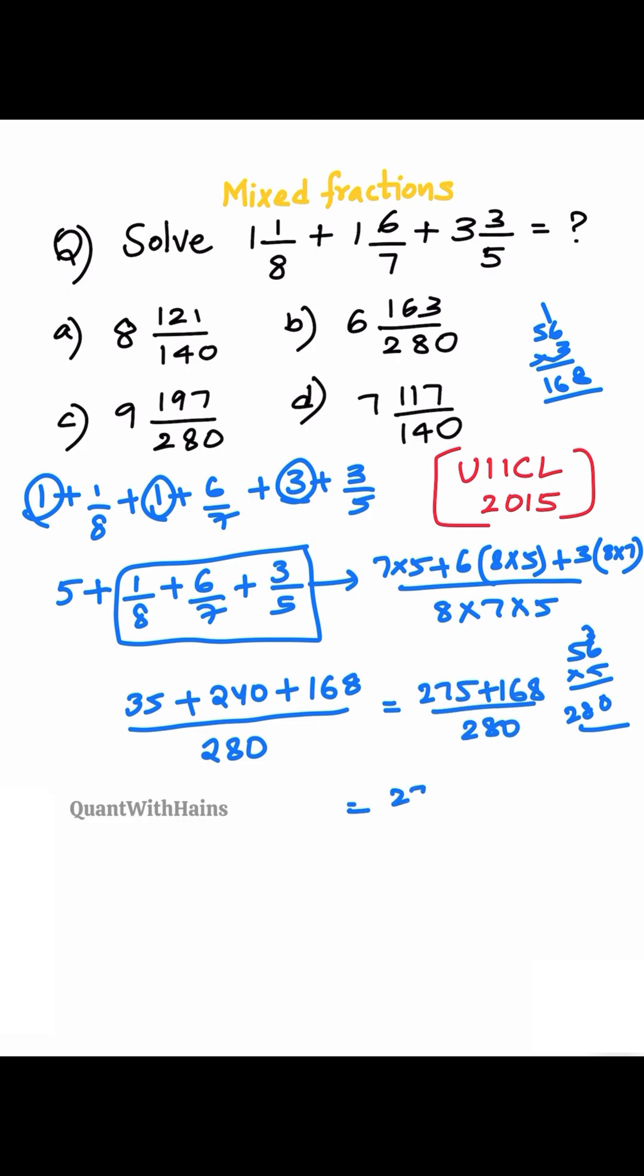Here we can write 275 plus 5 plus 163 by 280. Numerator we get 280 plus 163 by 280. Value is 163 by 280.